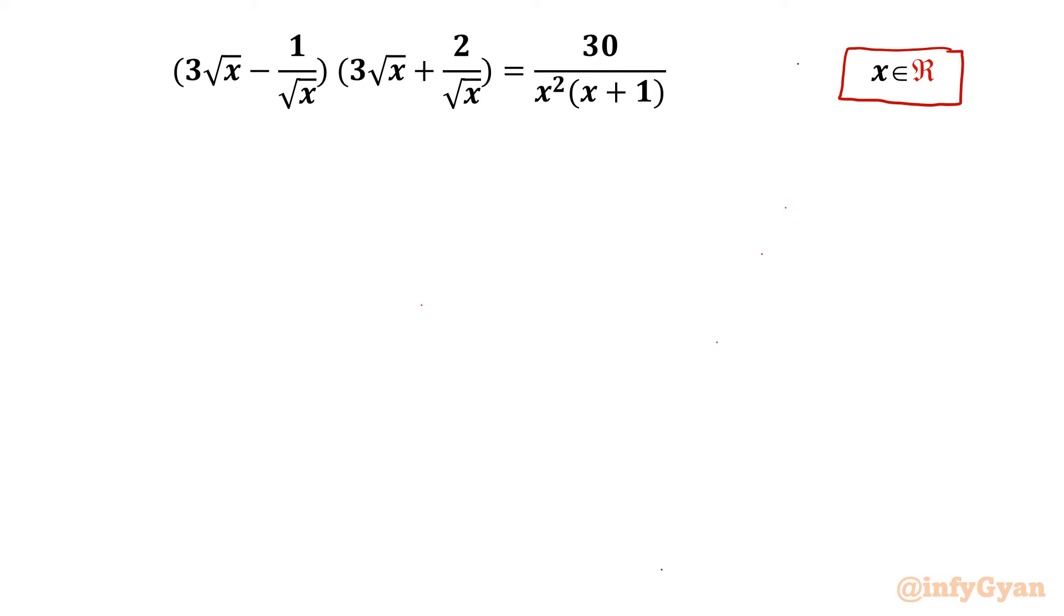So let us get started by writing the domain of the equation as usual. Point number 1: because of square root x, x should be positive. And see, denominator cannot be 0. So I can frame one condition for RHS and LHS denominator: x cannot be 0 and -1. Overall conclusion is x should be always positive.